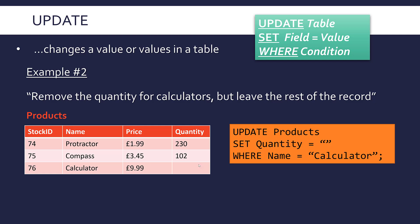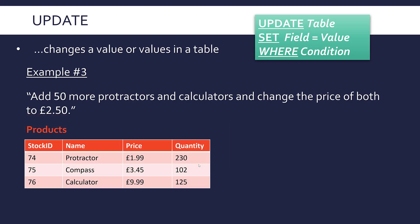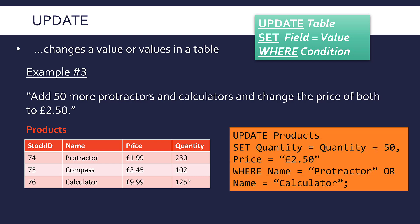That's not something you do all the time, but that's how you'd do it. One final example where we're making two changes at once: if I want to add 50 more protractors and calculators and change the price of both to £2.50, I need to change two things at once — which you can do within a single UPDATE query. So I'm adding 50 to both protractors' and calculators' quantities, and setting both prices to the same value.